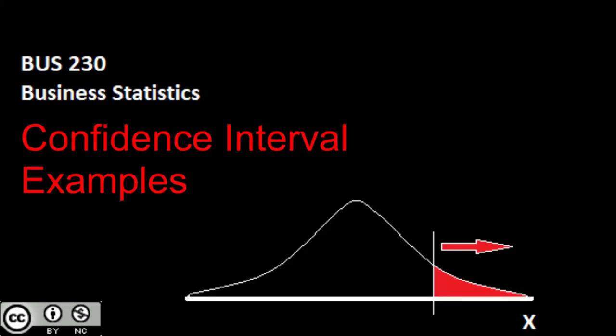In this video, we're carrying on with our confidence intervals, determining adequate sample size, and using our finite population correction factor. We're going through a bunch of examples, working through how to use each one. The big thing is really identifying which tool I need for which job. Without further ado, let's jump in and take a look at some of these examples.